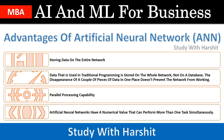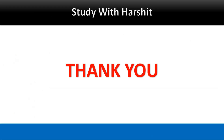The next advantage is parallel processing capability. Artificial neural networks have a numerical value that can perform more than one task simultaneously. Thank you.